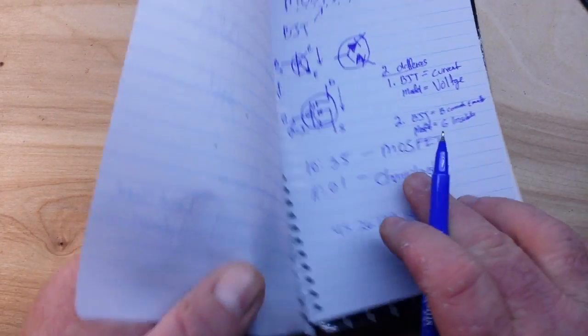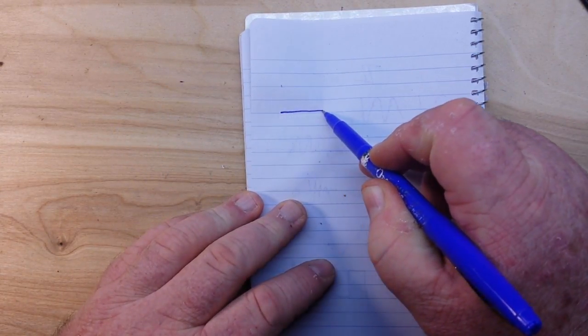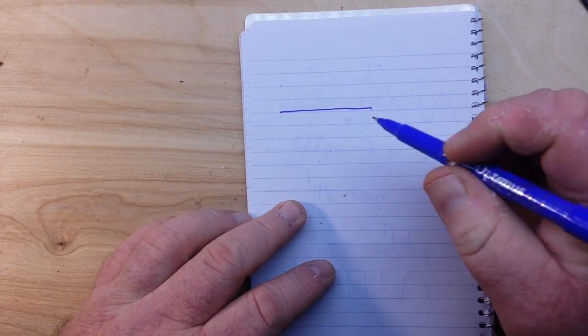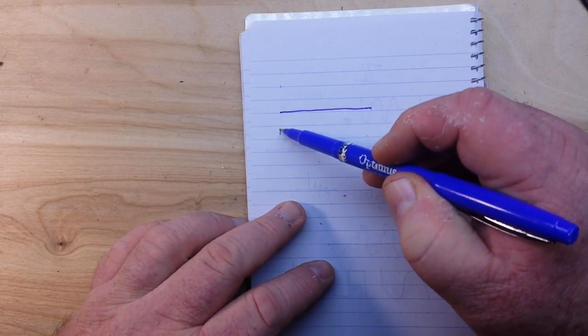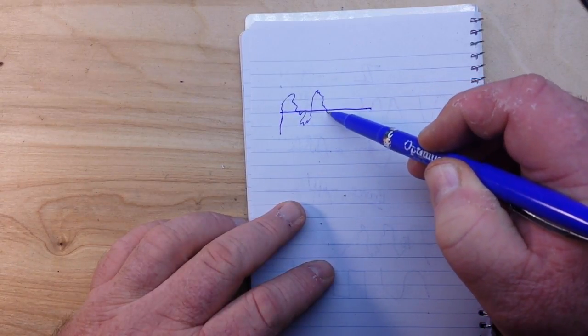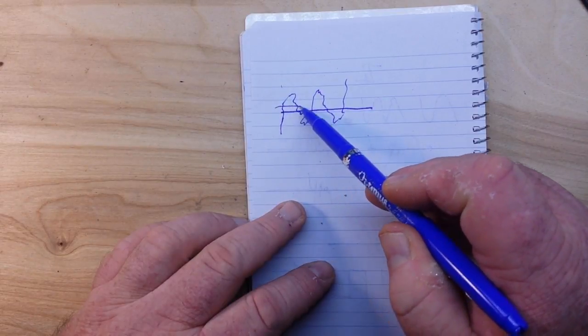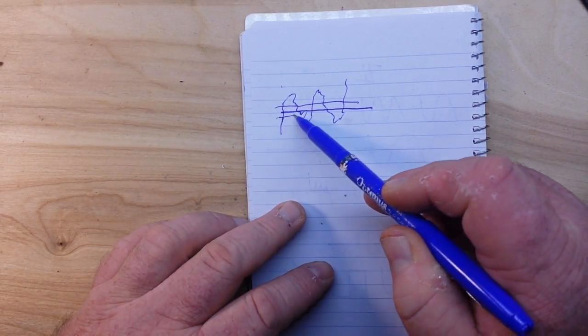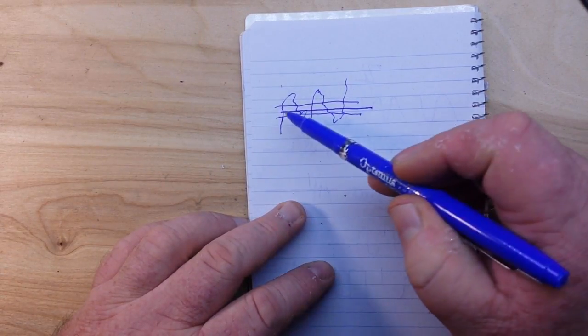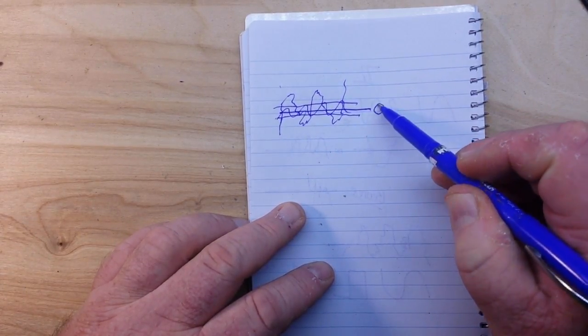All right, new piece of paper. So what we can do with our Schmidt trigger is null out this area here. So again, this is our zero volt.